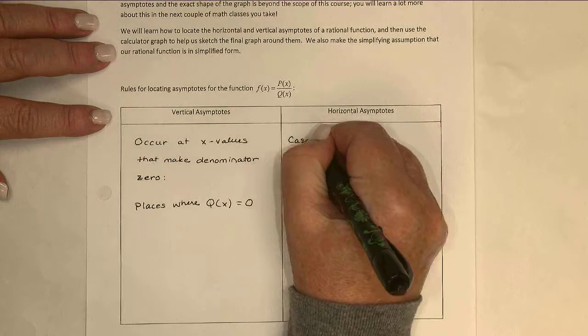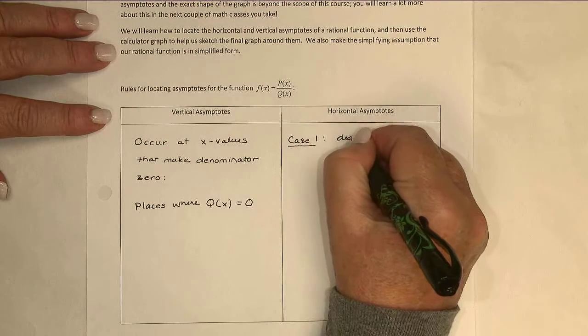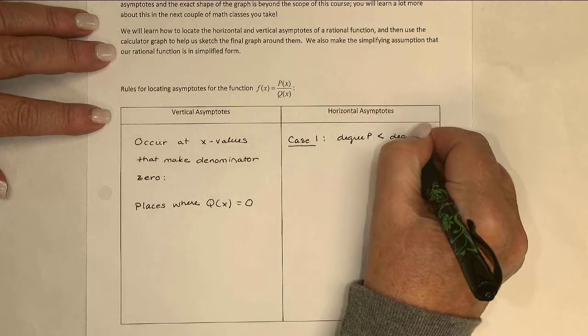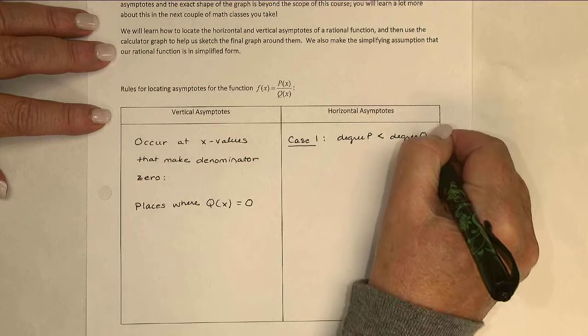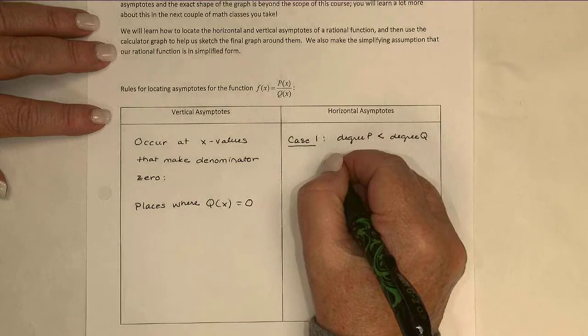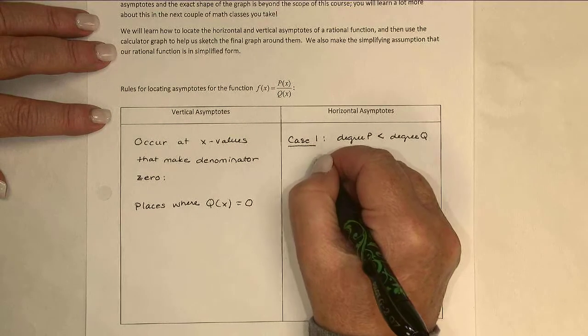The first case is when the degree of p is less than the degree of q. So the degree on the top is smaller than the degree on the bottom. In that case, the x-axis, or y equals 0, will be a horizontal asymptote.